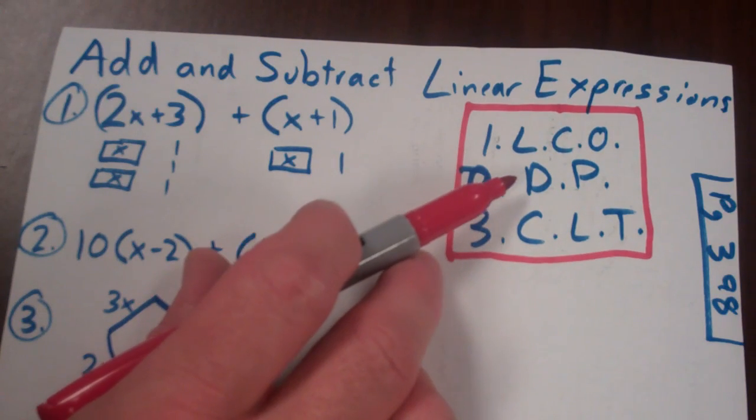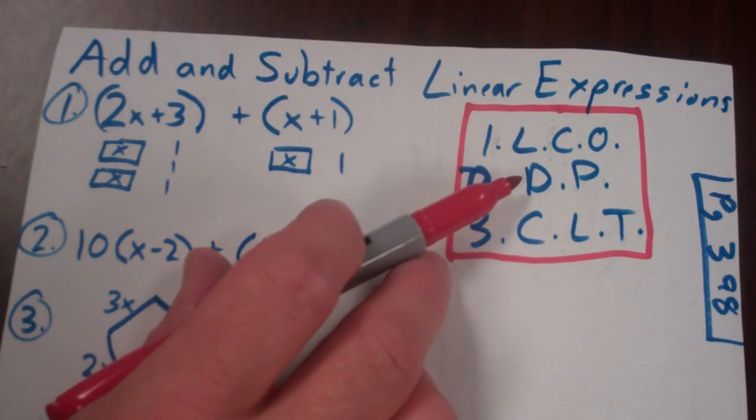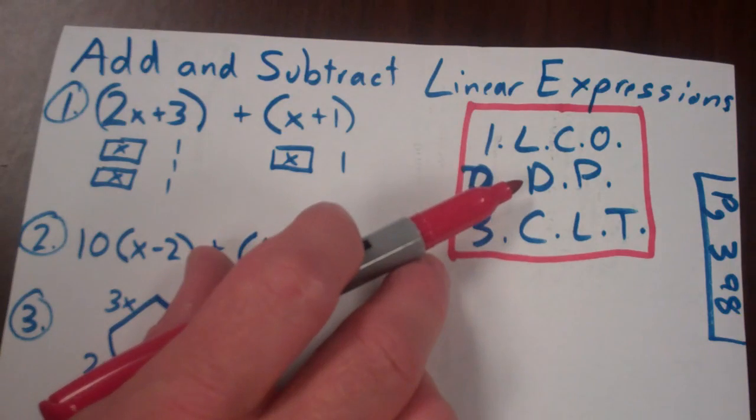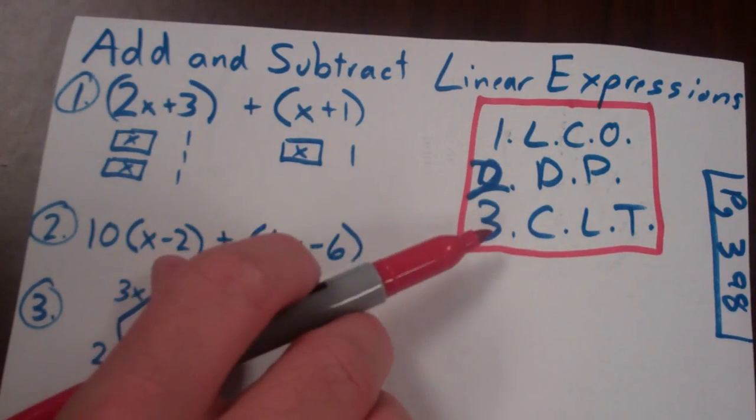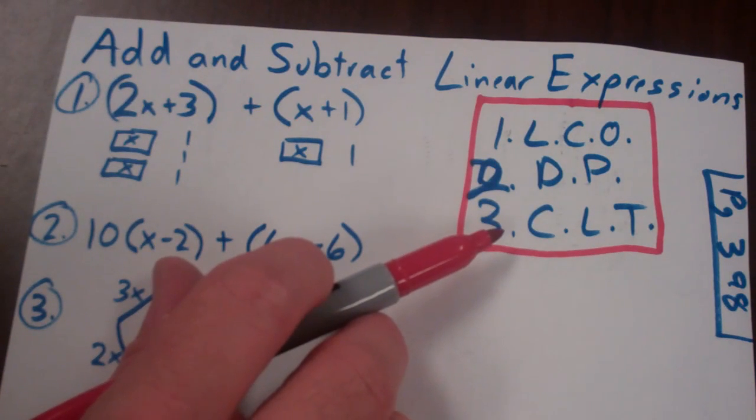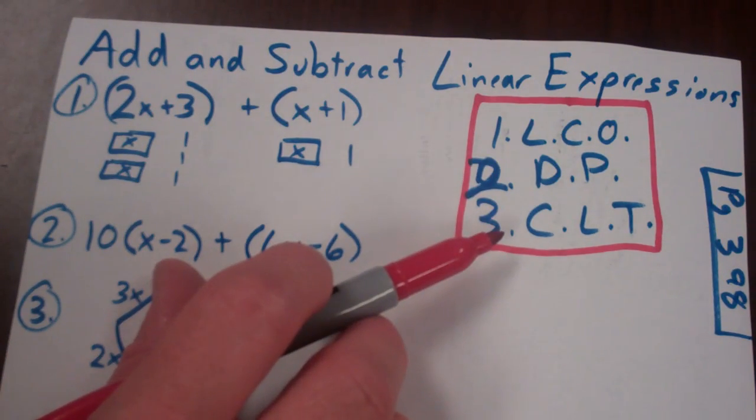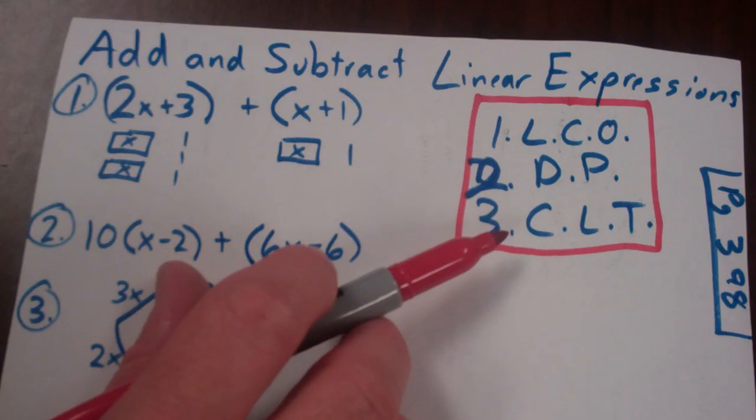Distributive property, break things out of jail is what I call that. So things that are caught inside of a parenthesis or a grouping symbol can get together with things on the outside as well. And then combine like terms, get your same like things, same type of things together.